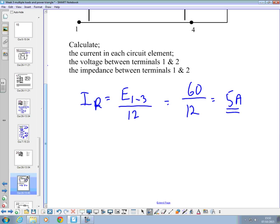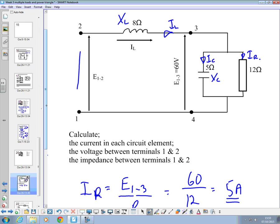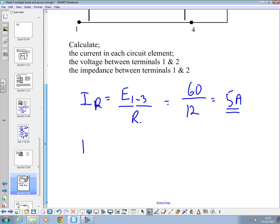Anything else you can calculate? And I, the boys who have been with me a while know I like that. Formula, then put the numbers in, then give the answer. If you've gone wrong, I can see where you've gone wrong. IL. Can we get IL? We don't know the voltage across it, so at the moment we can't. We could get IC, though, could we not?